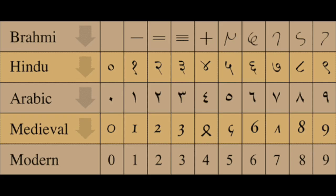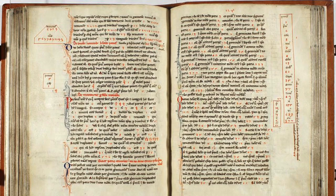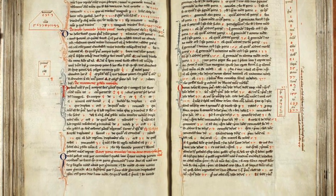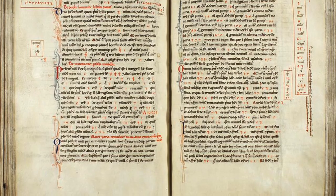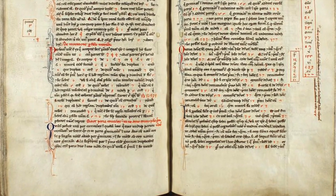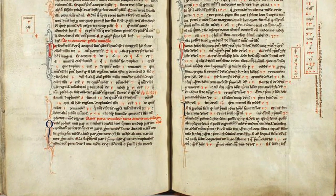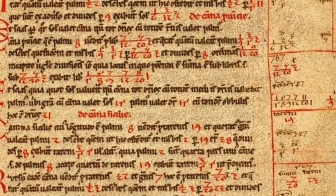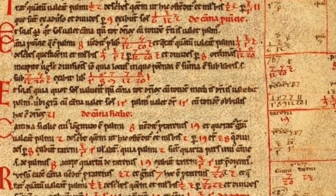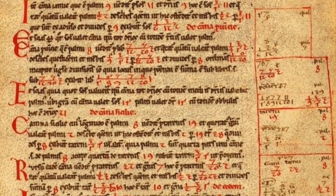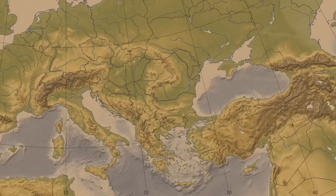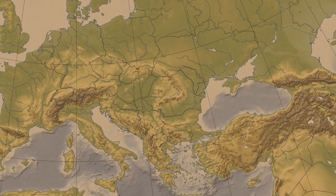We also didn't have a symbol for nothing, or zero. Leonardo recorded his observations in his book, Liber Abaci, or in English, Book of Calculation. This book kick-started the use of Arabic numerals across Europe.